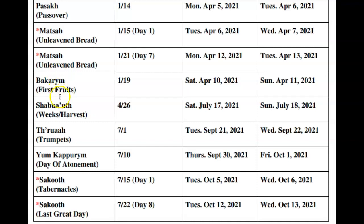You can learn more about the spring appointed times — Passover, Unleavened Bread, and Firstfruits — then there's also the Harvest Festival, which is the summer appointed time. And then there are the fall appointed times: Trumpets, Atonement, and Tabernacles. Trumpets will begin around September 21st through September 22nd, 2021, from sundown to sundown.